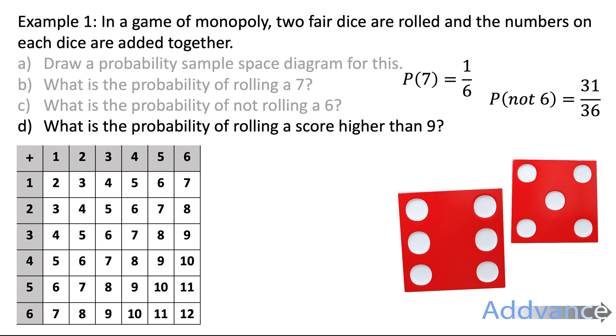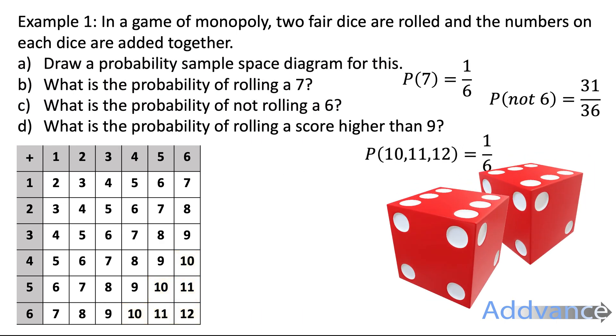What is the probability of scoring a number higher than 9? Let's highlight all the numbers bigger than 9: 10, 10, 10, 11, 11 and 12. And here, there are 6 ways of that happening out of 36 possible combinations. 6 out of 36 is 1 out of 6. And the final answer is 1 out of 36.